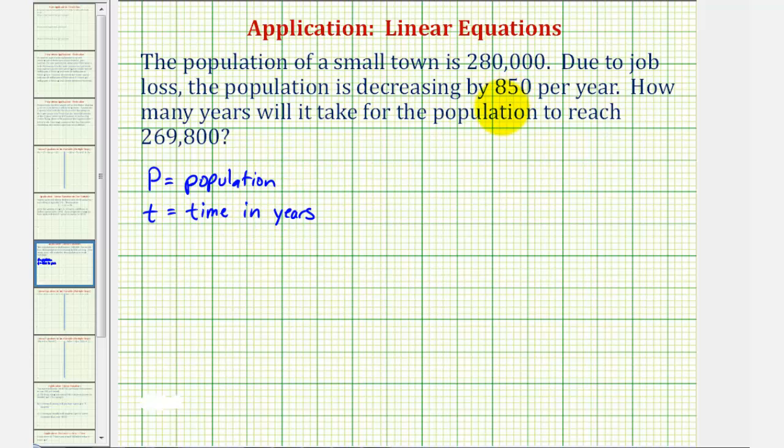Given this situation, the population P will equal the starting population of 280,000. But because the population is decreasing by 850 per year, we'll have to subtract 850 times T, again where T is the number of years.